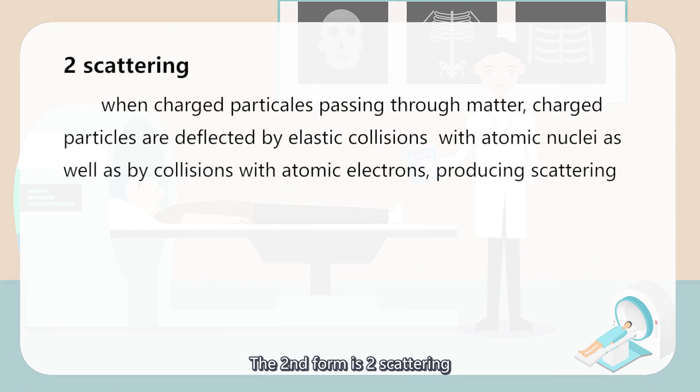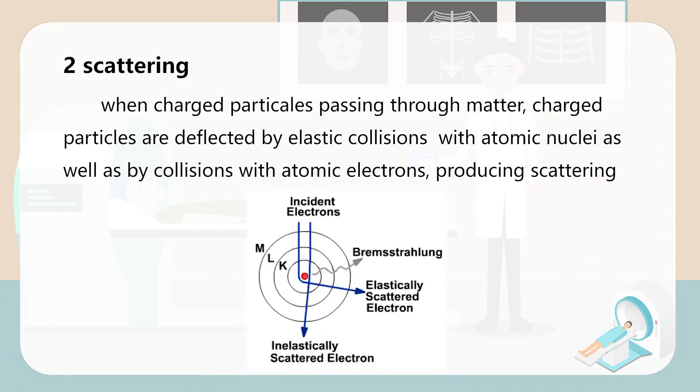The second form we call scattering. As shown in this picture, when charged particles are passing through matter, they are deflected by elastic collisions with atomic nuclei as well as by collisions with atomic electrons, then producing scattering.